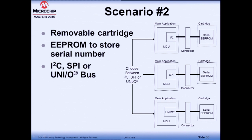In scenario two, we have a removable cartridge where we want to store a serial number on an EEPROM. Should we use I2C, SPI, or UNIO? We could use SPI — four wires plus ground — or I2C. But think about this: with UNIO, you only need one active wire and a ground through the connector. This can improve reliability, reduce connector pin count, and avoid problems from cartridge manipulation. If you can afford to go slower, UNIO is a compelling choice here.